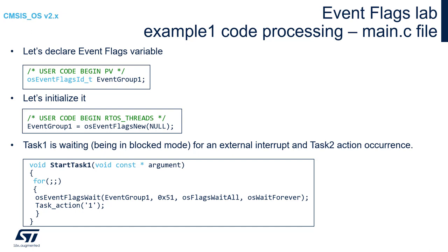The third argument would be the selected options. In our case, we would like to wait for the complete set of masks. The last fourth argument is a timeout. In our case, we will wait until the mask is set, so we will use osWaitForever. After EventGroup1 is set to 0x51, Task1 will perform its action by sending '1' over the SWO interface.